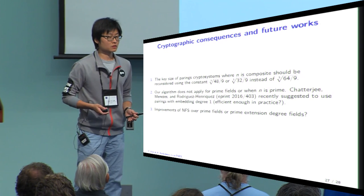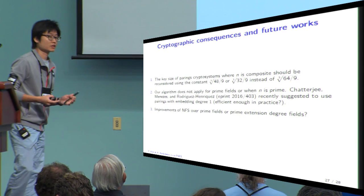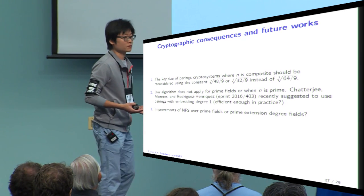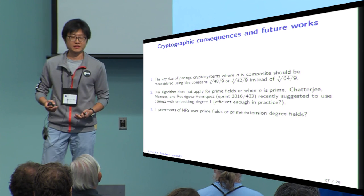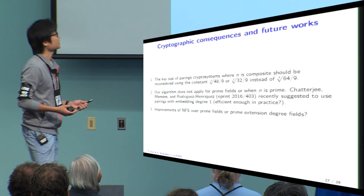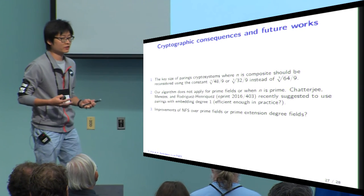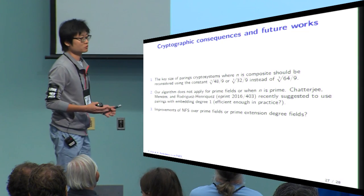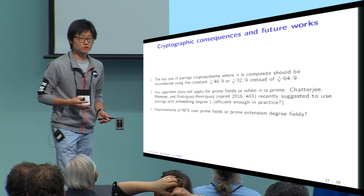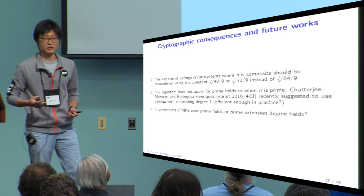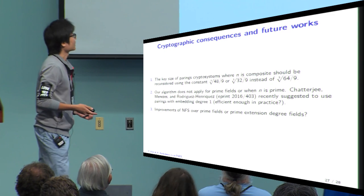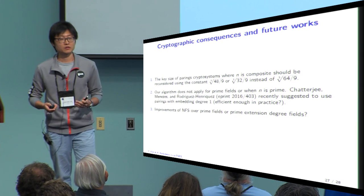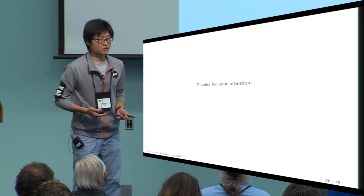To conclude: I think we should reconsider the key size of pairing-based cryptography. Our algorithm does not apply to prime fields or prime extension degree fields. Chatterjee et al. recently suggested using pairing with embedding degree 1, but the efficiency is unclear. It would be an interesting open problem to improve pairing computation with embedding degree 1 or prime, and also to improve NFS for prime fields or prime extension degree fields. Thank you for your attention.